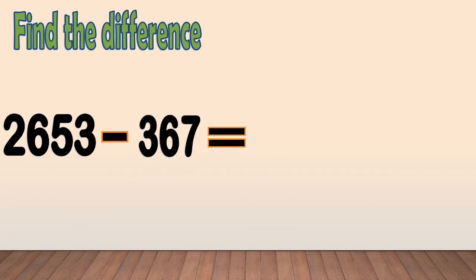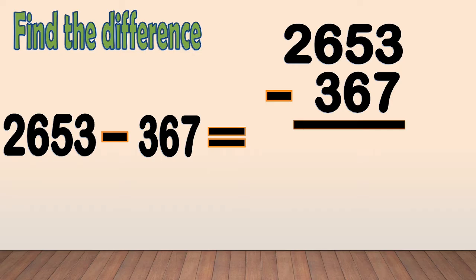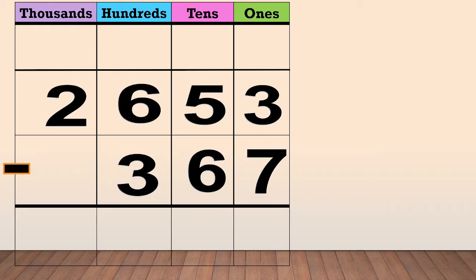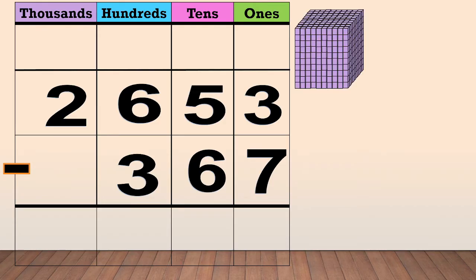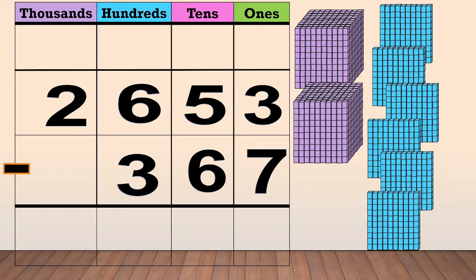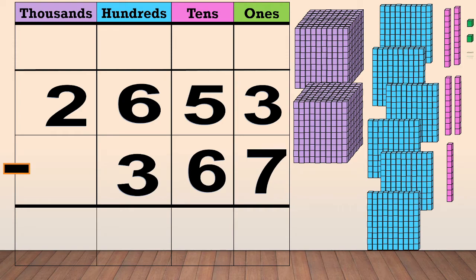Another example. Find the difference: 2,653 minus 367. Arrange the numbers in columns. Place each digit based on its place value. 2,653 has 2 thousands, 6 hundreds, 5 tens, and 3 ones.